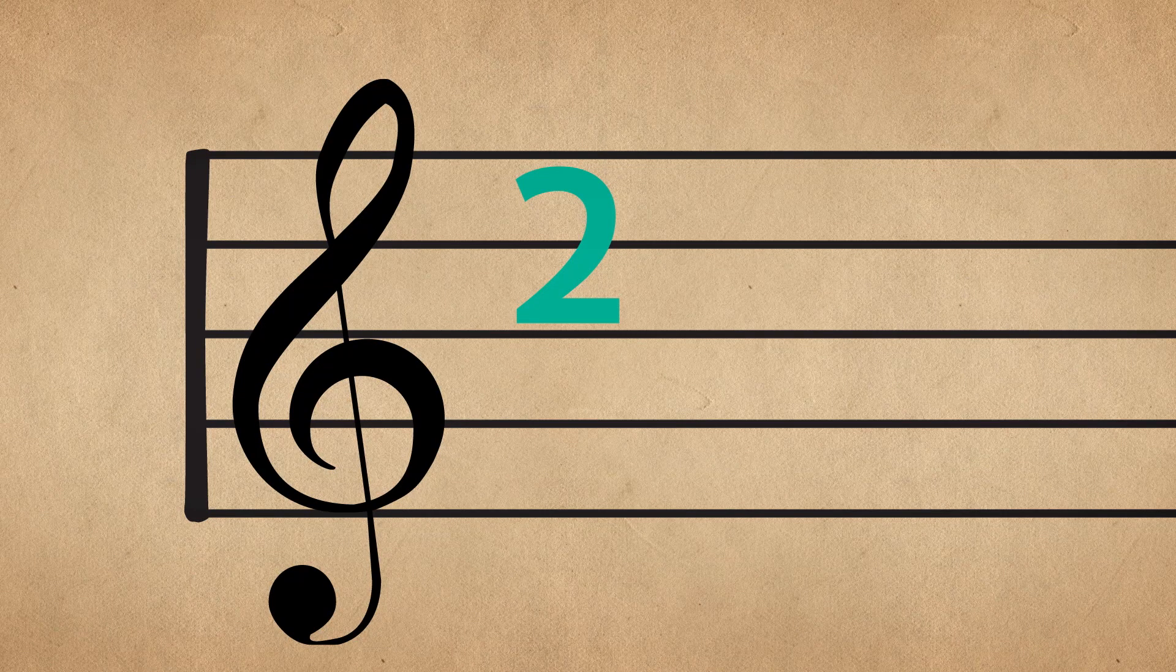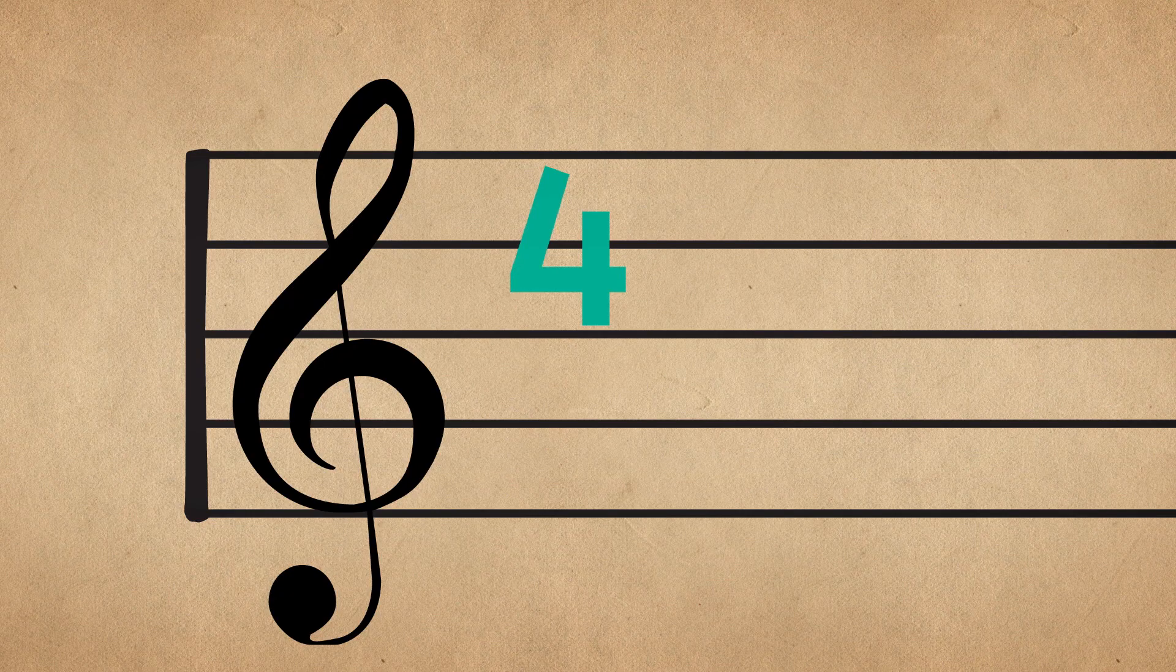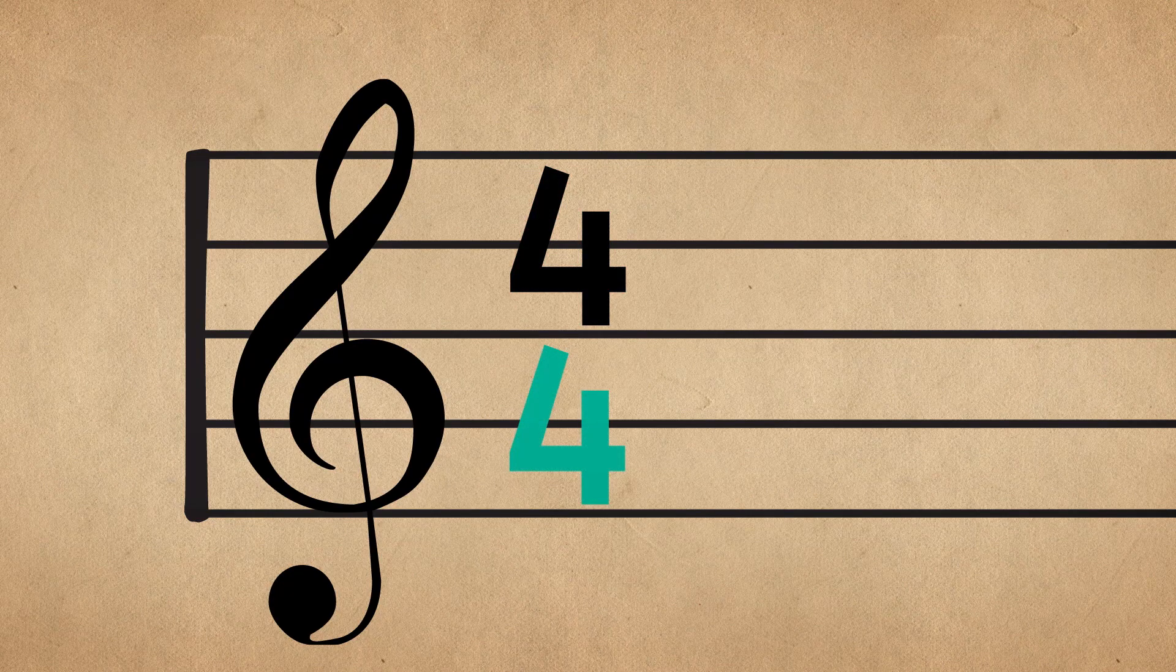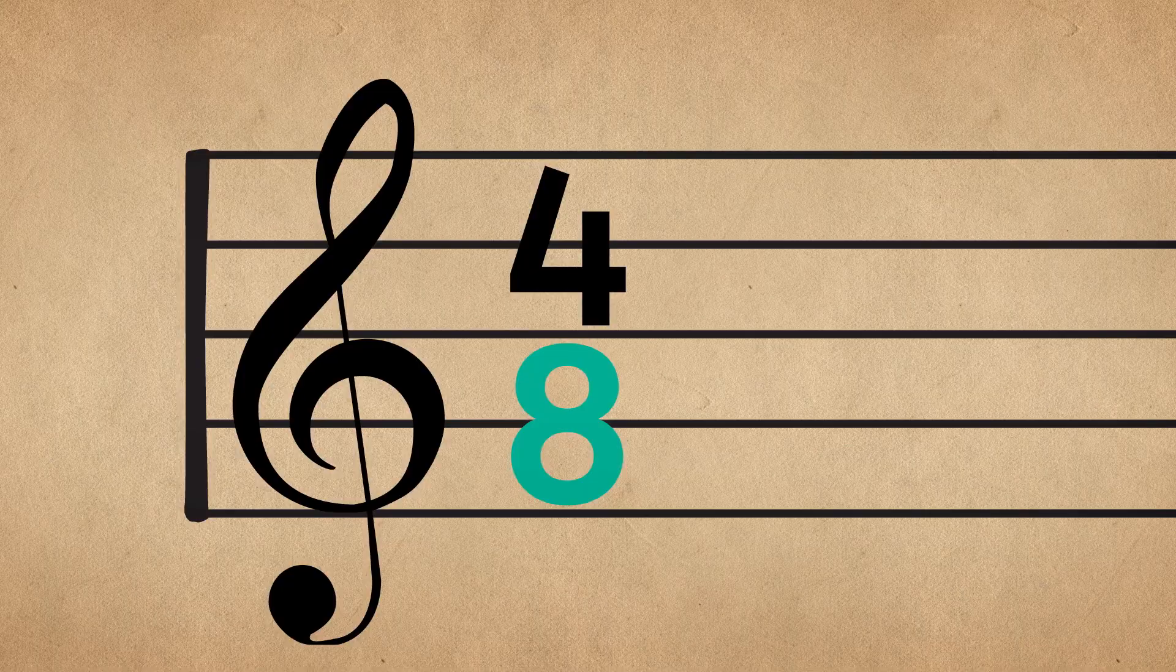This says there are two beats in each bar, this says there are three, this one four, and so on. The bottom number tells us what kind of note is to be used as the basic unit for the beat. One corresponds to a whole note, two to a half note, four to a quarter note, an eighth to an eighth note, and so on.